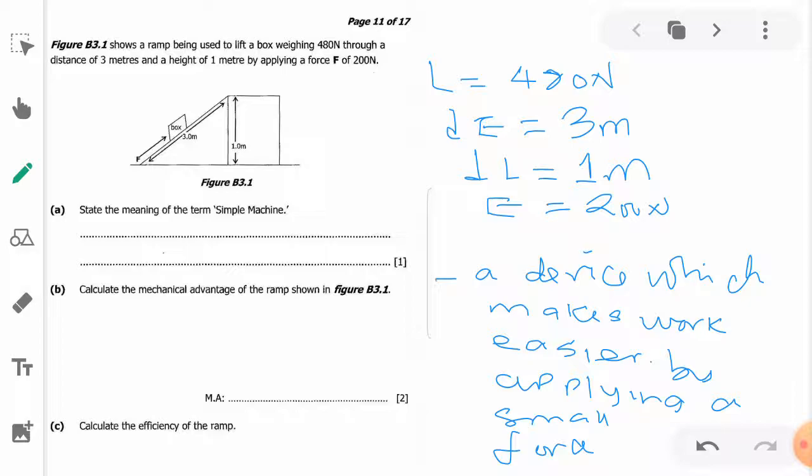Question b says calculate the mechanical advantage of the ramp. Now mechanical advantage, like we learned earlier, mechanical advantage is equal to load over effort. And the load is equal to 480 newtons.